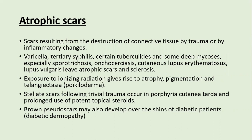Atrophic scars result from destruction of connective tissue by trauma or inflammatory changes. Causes include varicella, tertiary syphilis, certain tuberculides, deep mycoses (especially sporotrichomycosis), onchocerciasis, cutaneous lupus erythematosus, and lupus vulgaris — all leaving atrophic scars. Exposure to ionizing radiation gives rise to atrophy, pigmentation, and telangiectasia, producing poikiloderma-like changes. Stellate or linear scars following trivial trauma are seen in porphyria cutanea tarda and with prolonged use of potent topical steroids. Brown pseudo-scars developing on the shins of diabetic patients are called diabetic dermopathy.